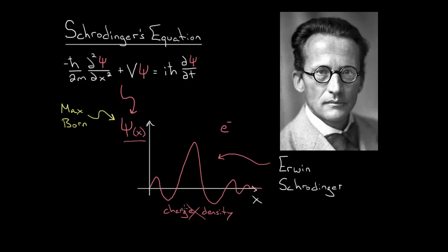Max Born said, nah, don't interpret it as the charge density. What you should do is interpret this psi as giving you a way to get the probability of finding the electron at a given point in space. So Max Born said this, if you find your psi, like he said, go ahead and use Schrödinger's equation, use it, get psi.